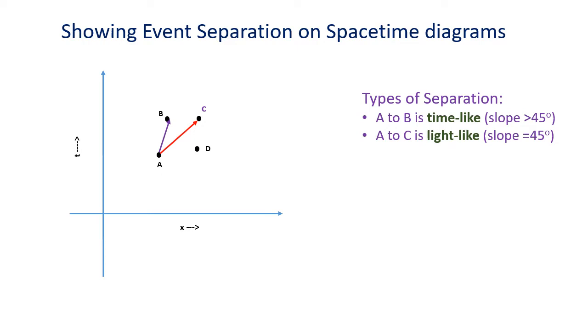It's not possible to travel between A and D in this diagram. It's a space-like separation. The slope of the line is less than 45 degrees. An example would be because it takes four years for light to travel from Alpha Centauri, an event occurring on Alpha Centauri in five minutes time, Earth time, has a space-like separation from us.